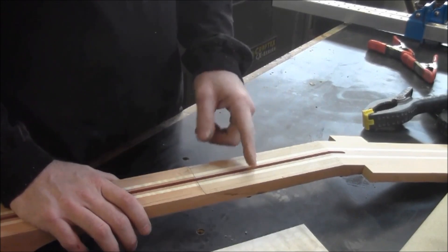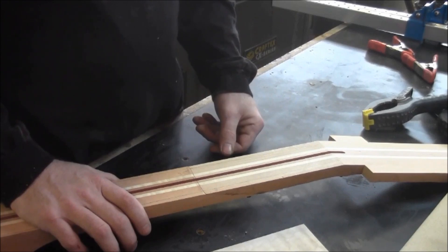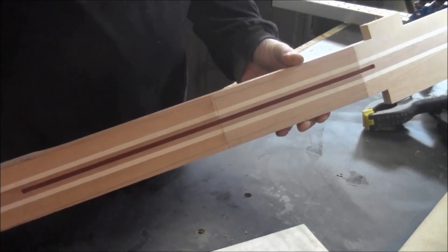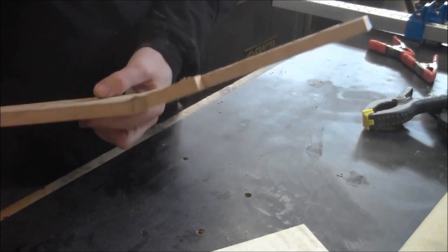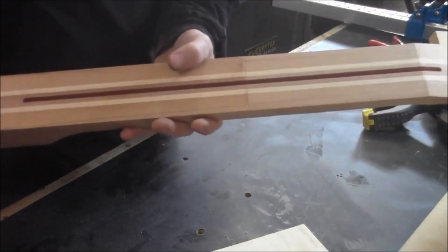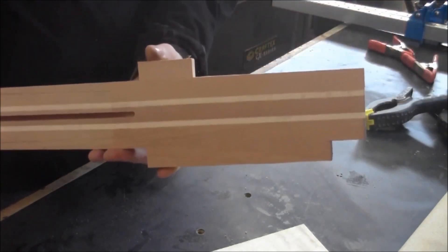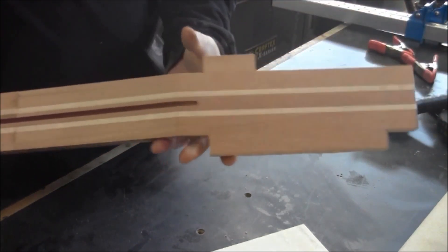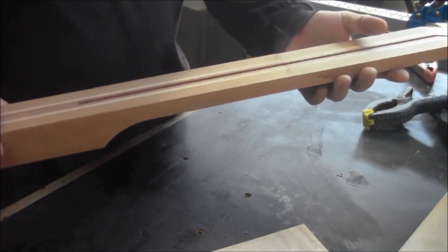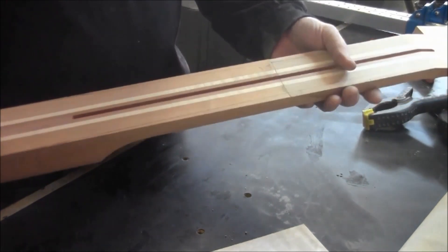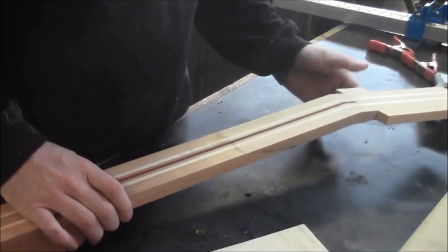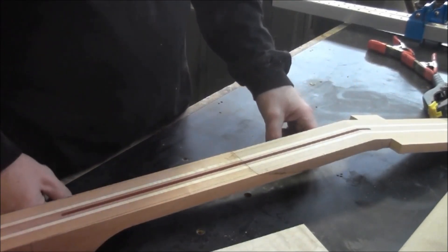Last we were looking at, we were gluing up the neck blank. Since then, I've cut the truss rod channel, cut the side profile in the neck, and glued extensions on for the headstock. We've come a long way. I'll have to chronicle those steps in the next build. The video was there yesterday, but the camera shut down when the battery died. This is where we're at now.